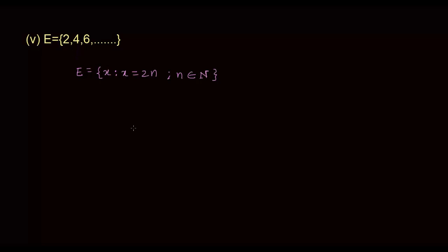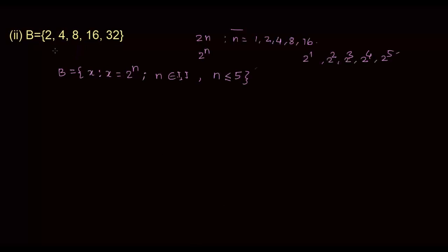That is how you convert from the roster form to the set builder form. Alternatively, instead of writing x = 2n, you can also write x = 2ⁿ where n belongs to the set of natural numbers and n is strictly less than 6 — that will also work, since 5 is the highest value needed. Both representations are correct and you'll be marked right.